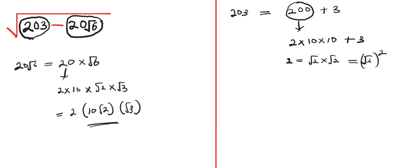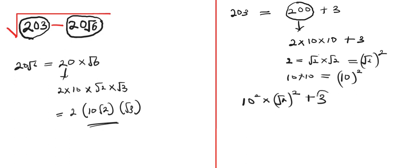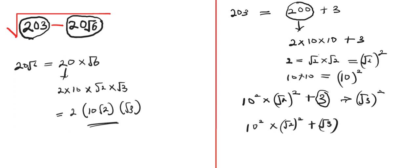So 2 can be rewritten as root of 2 times root of 2, which is equal to root of 2 squared. If you square root of 2, you are going to have 2. And here we have 10 times 10, so we have 10 squared. This whole expression can be rewritten as 10 squared times root of 2 squared, so we now have plus 3. And we can rewrite this 3 as root of 3 squared. So this now becomes 10 squared times root of 2 squared plus root of 3 squared, which equals 203.